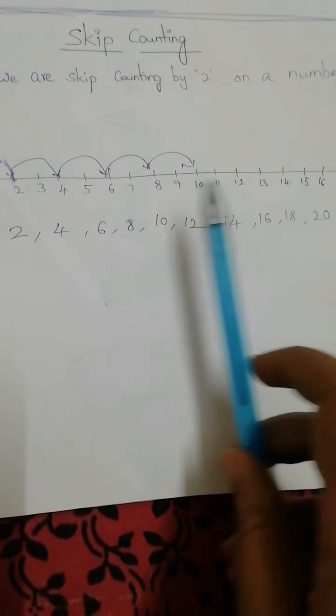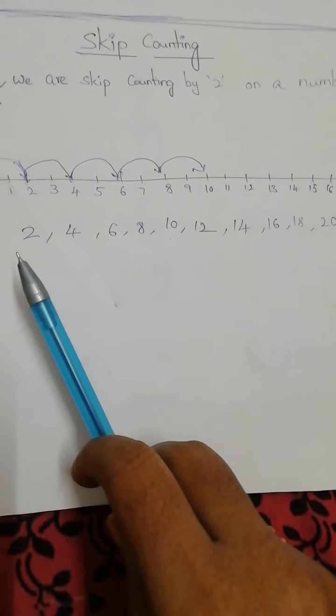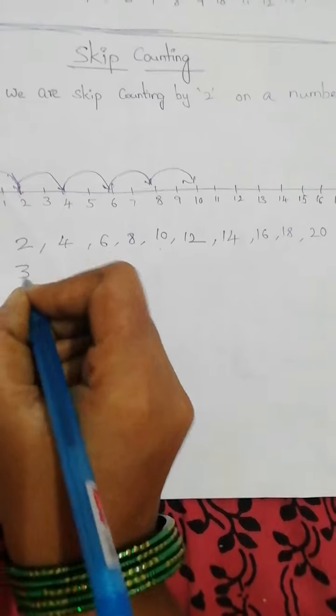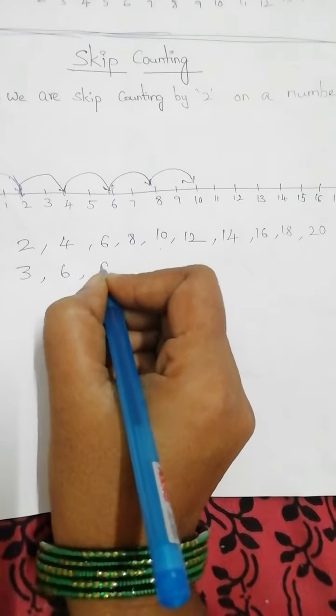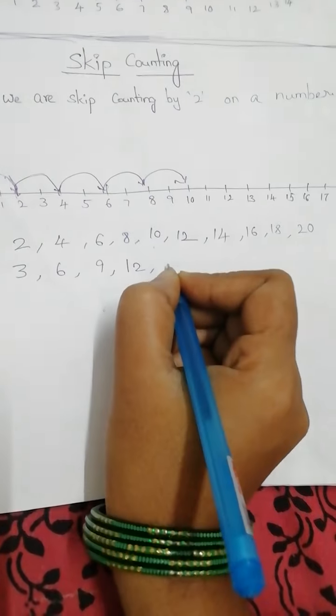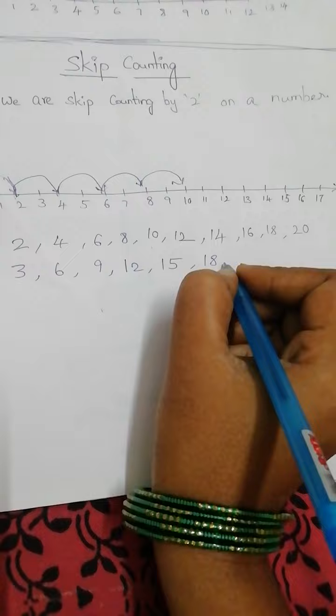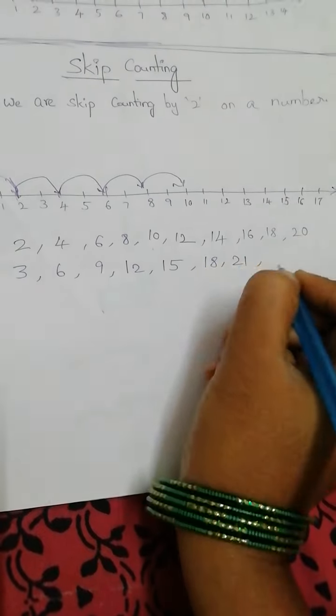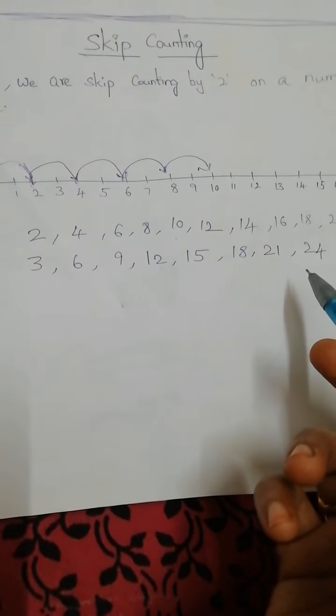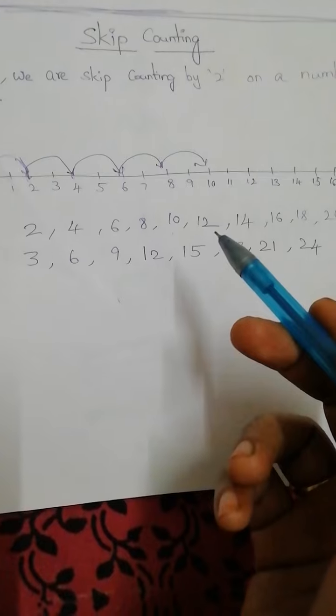Likewise, if we say skip counting by three, it will give us three, six, nine. Nine plus three is twelve, twelve plus three is fifteen, then eighteen, then twenty-one, then twenty-four. So all the three table values will be there. Skip counting is the basis.